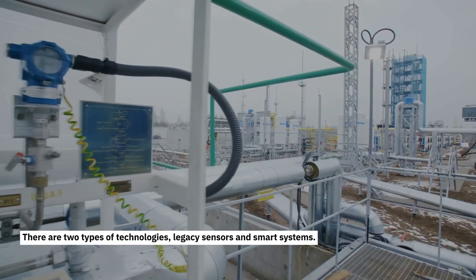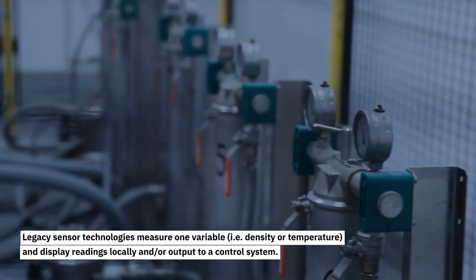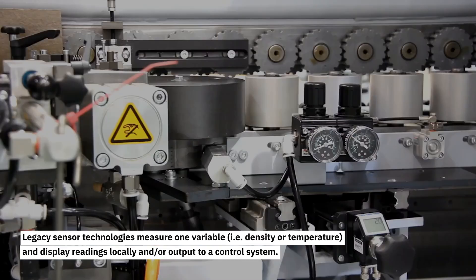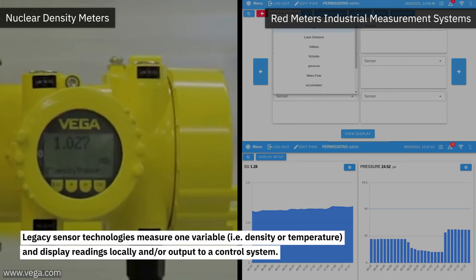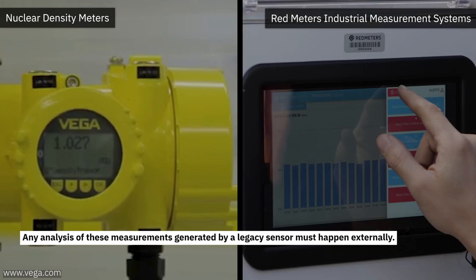Legacy sensors measure one variable, i.e. density or temperature, and display readings locally and/or output to a control system. Any analysis of these measurements generated by a legacy sensor must happen externally.